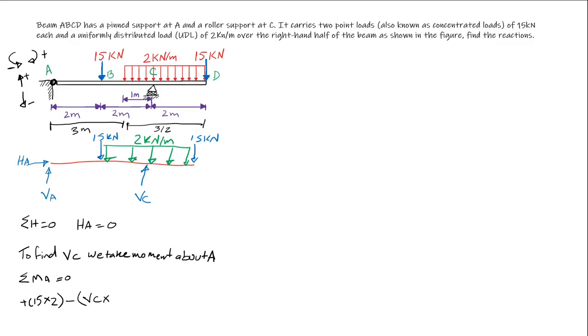Plus the UDL, 2 times the distance which is 3 meters, multiplied by the distance from A to the line of action of the UDL, 3 meters plus half of the distance of the whole UDL, so 3 plus 1.5 that would be 4.5, plus 15 multiplied by 6, which is this 15 kN acting clockwise, multiplied by the total distance 6 meters, equal 0.